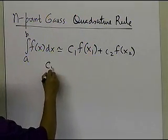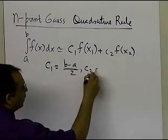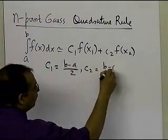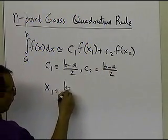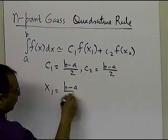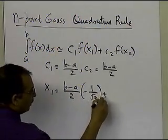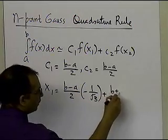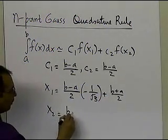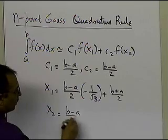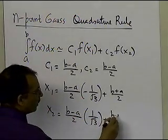In this case, we got c1 equal to b minus a divided by 2, and c2 equal to b minus a divided by 2. x1 turned out to be a formula: b minus a divided by 2, times minus 1 divided by square root of 3, plus b plus a divided by 2. x2 turned out to be a similar formula.